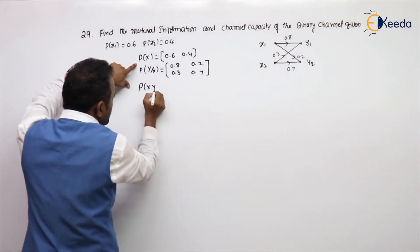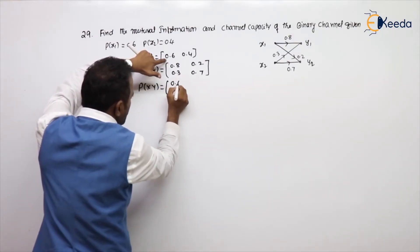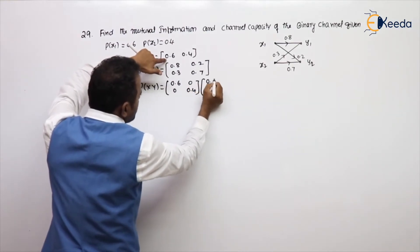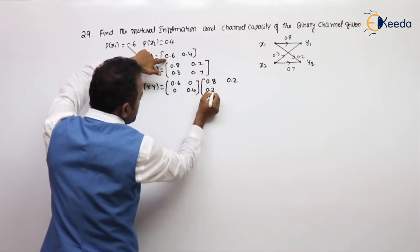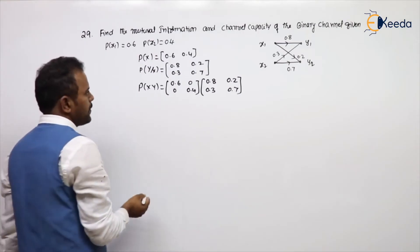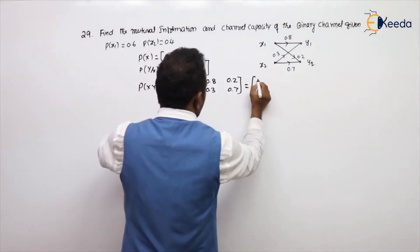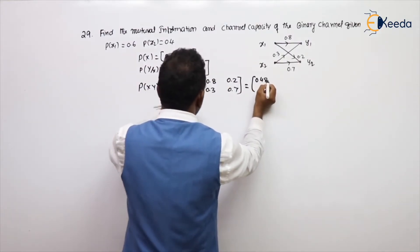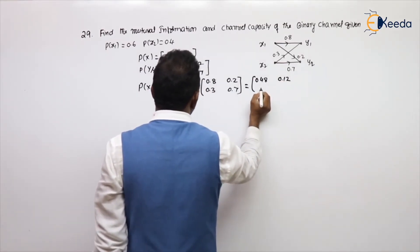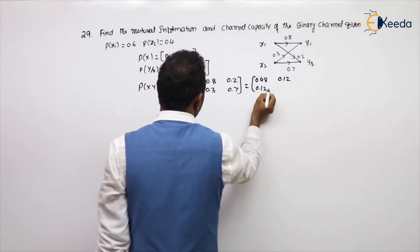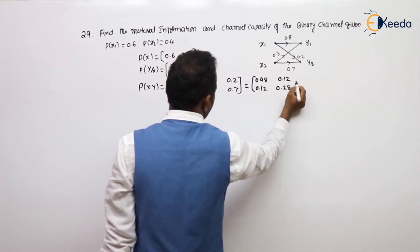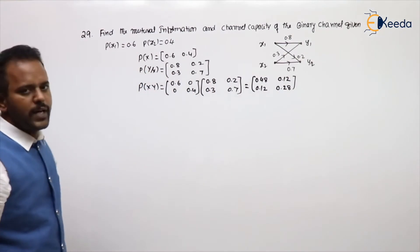The joint probability matrix P(x,y) is P(x) diagonal times the channel matrix: [0.6, 0; 0, 0.4] × [0.8, 0.2; 0.3, 0.7]. Multiplying gives [0.48, 0.12; 0.12, 0.28]. You can verify all probabilities sum to 1.